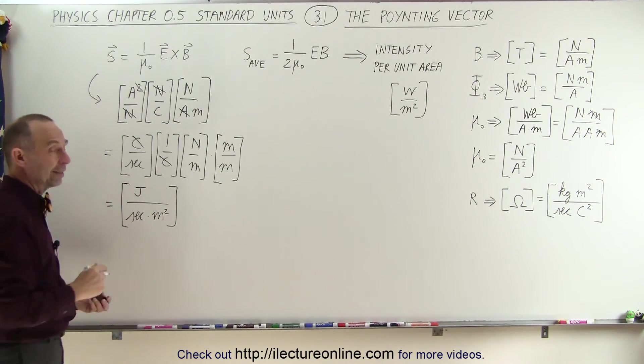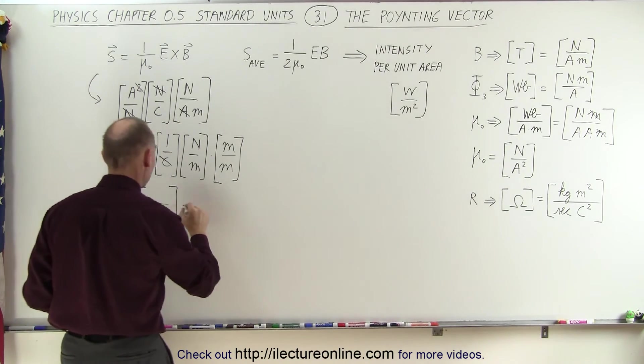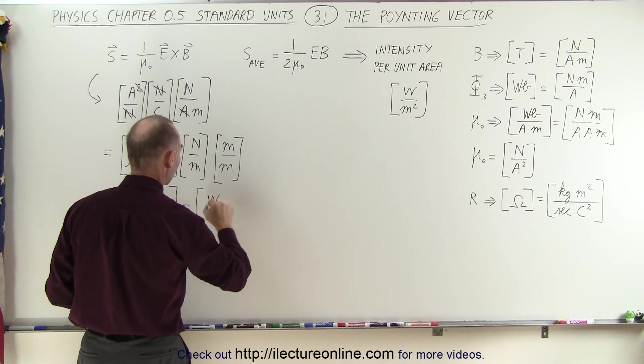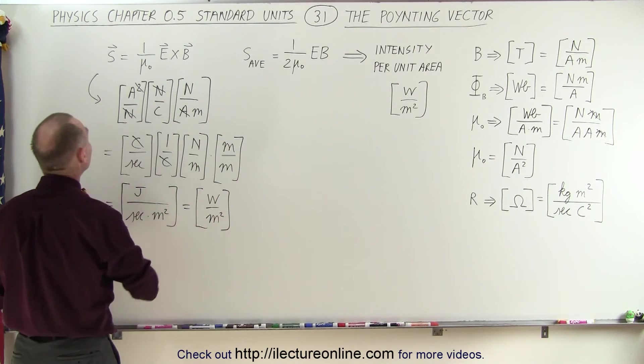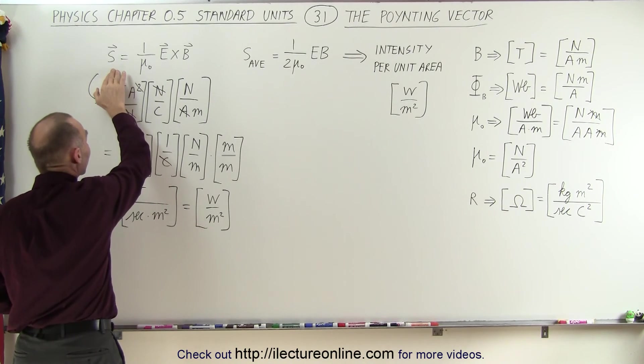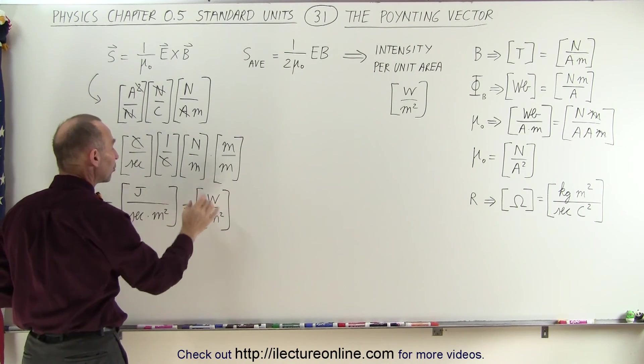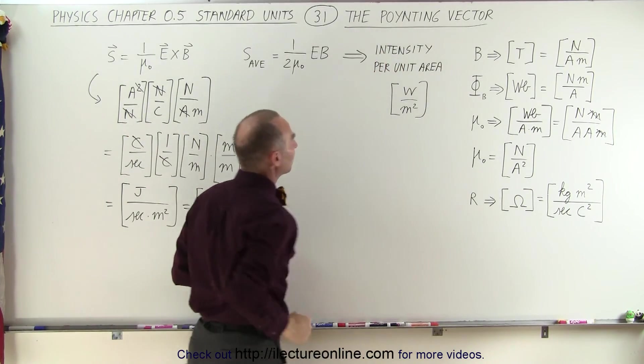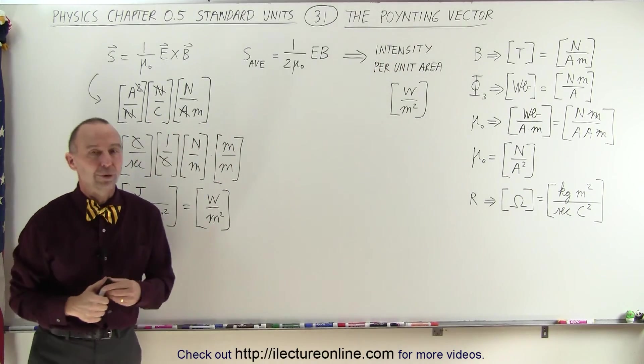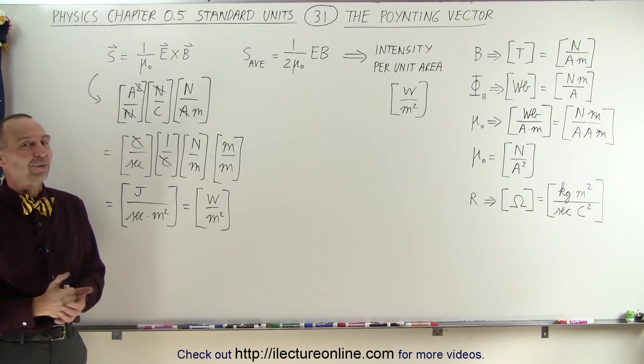And of course a joule per second, that is a watt. So this does indeed converge to watts per square meter, which means that the units of the magnitude of the pointing vector does indeed give you watts per square meter, which indicates it refers to the intensity of the electromagnetic radiation per unit area. And that's how it's done.